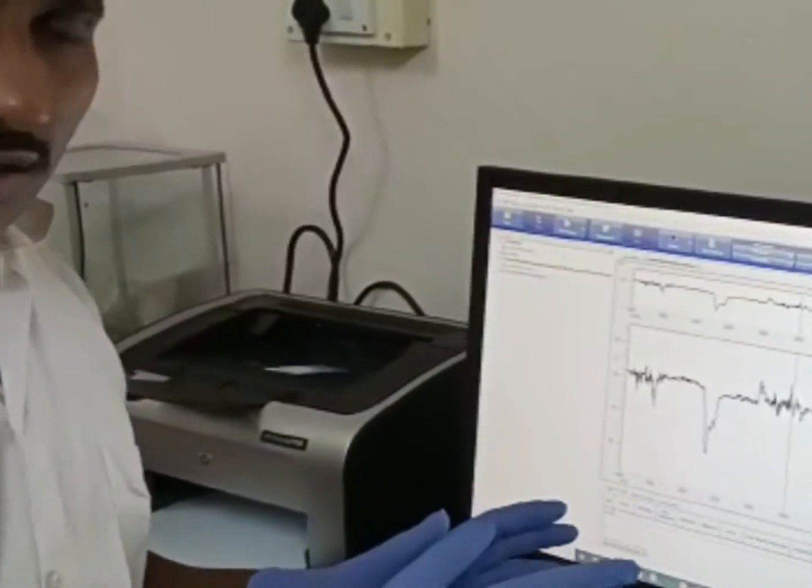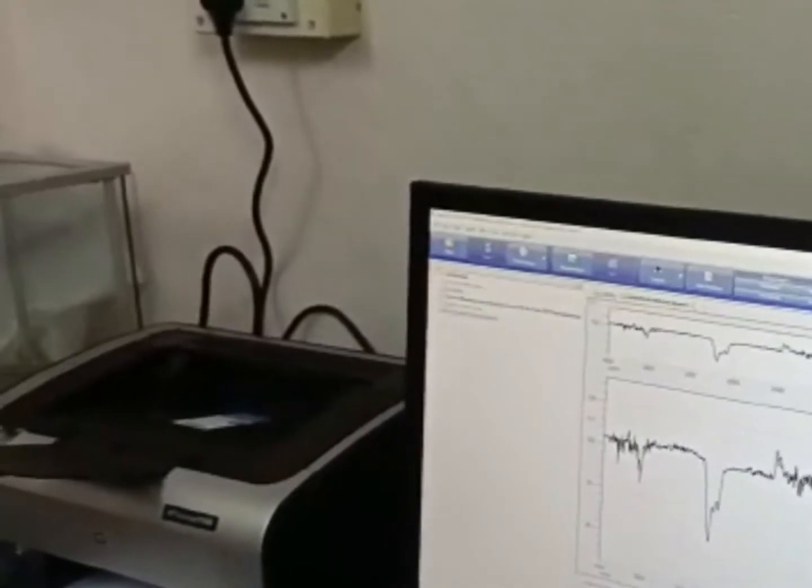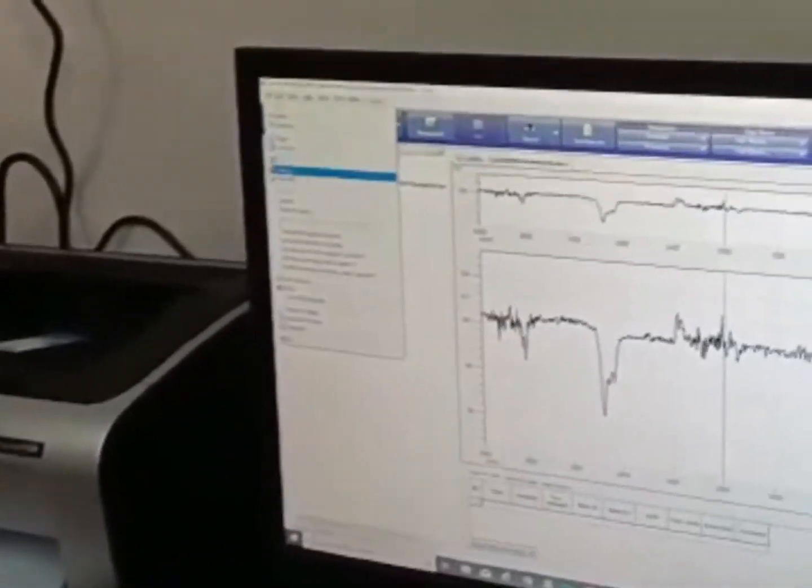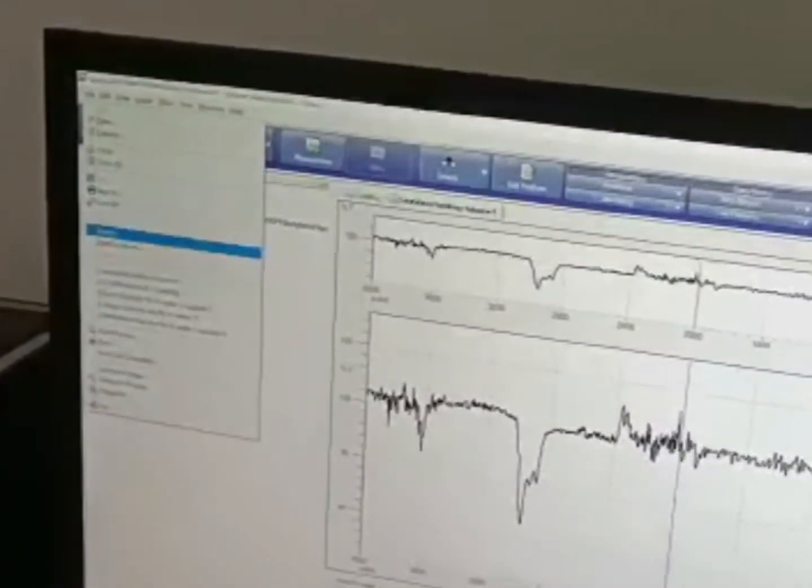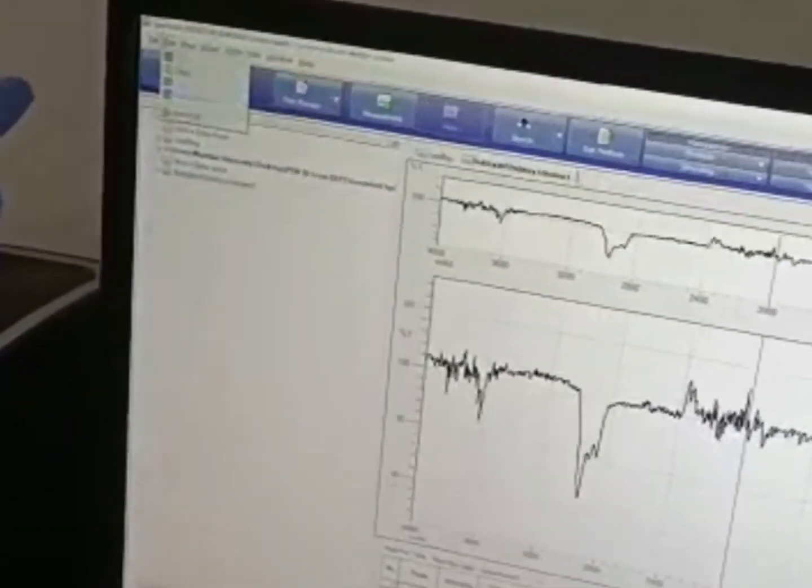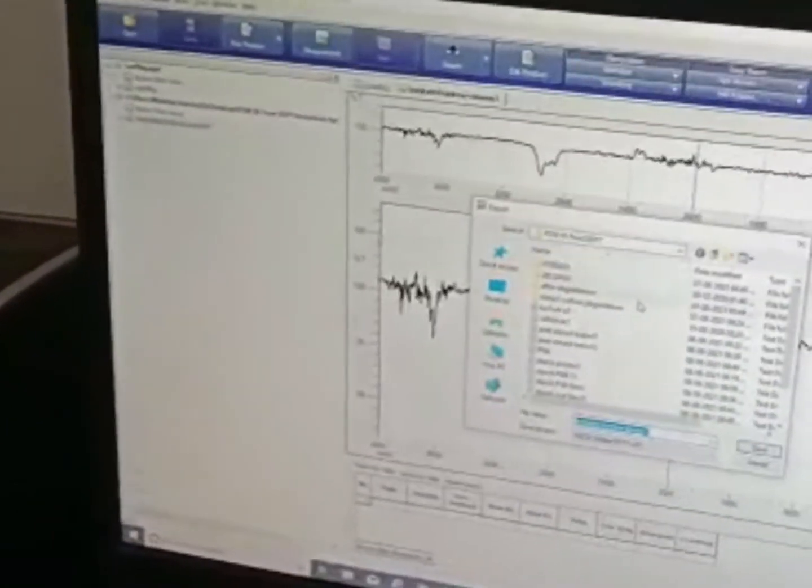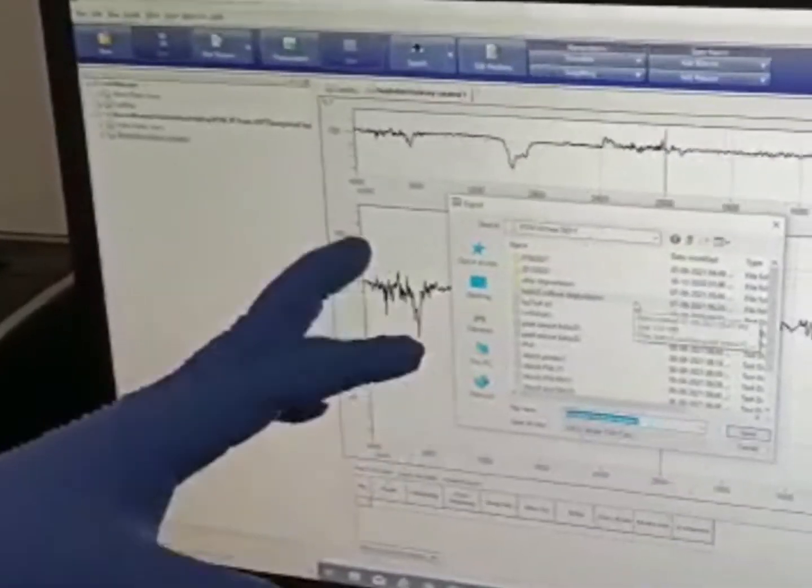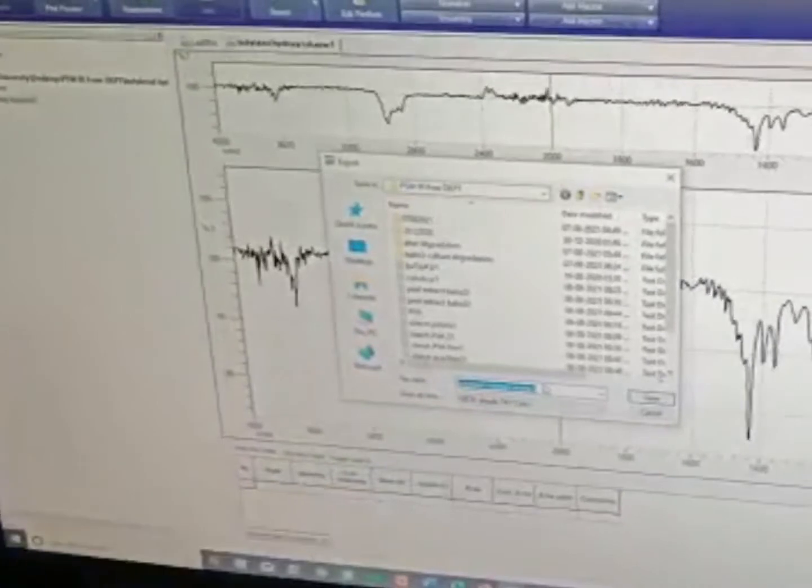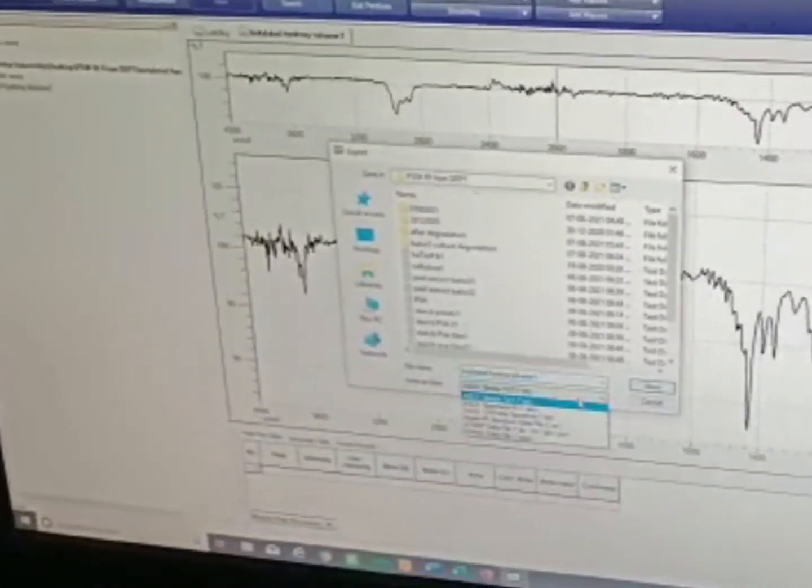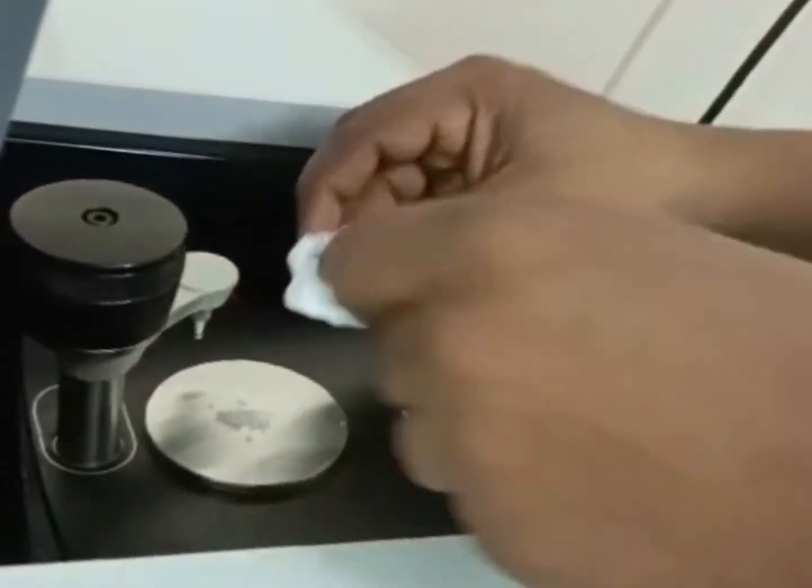After getting this IR spectra, save this file in the file menu. Go to file menu, save, then export this data in text file format. You will get the data in text file format and that data you can transfer to Origin or any other software. Now unwind the knob and remove all sample from the sample compartment.